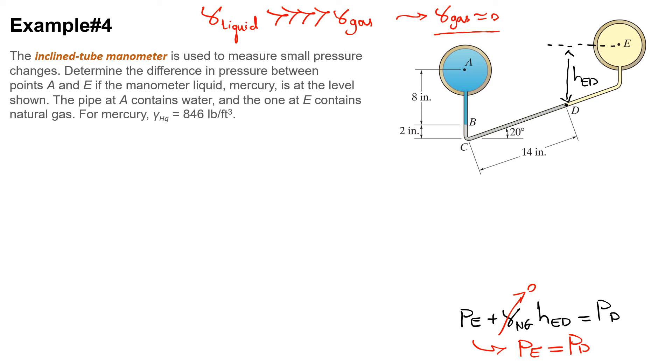I'm going to start writing the hydrostatic equation and move down from point A. Starting from point A, pressure at point A - I am moving down from point A to this point, so it would be positive: plus gamma of water times hAB. Now I'm going to move down in my mercury two inches, so it would be positive: plus gamma of mercury times hBC.